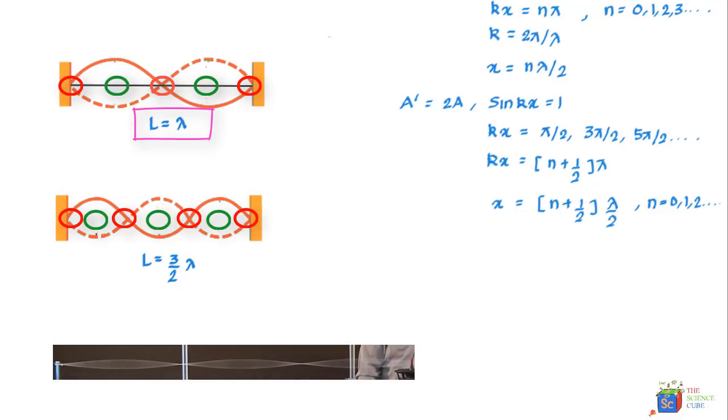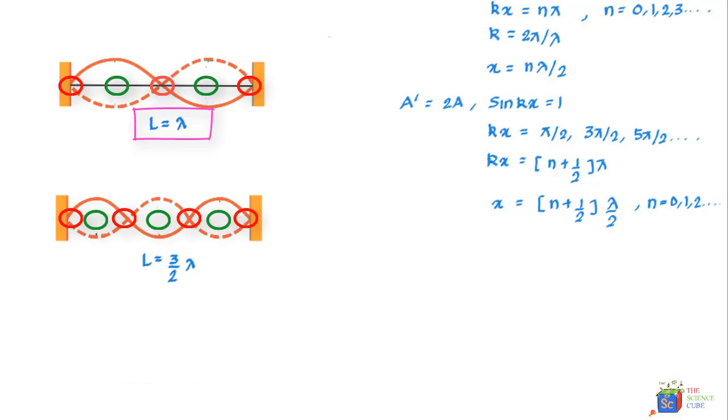By now you would have figured out that this can keep continuing and the patterns can have more and more loops with more nodes and antinodes increasing by one node at each step. And an additional lambda by 2 gets fitted into length L.